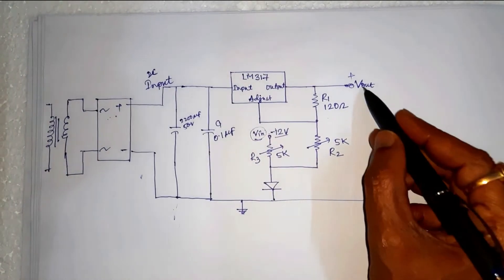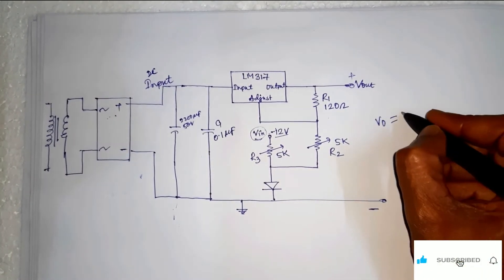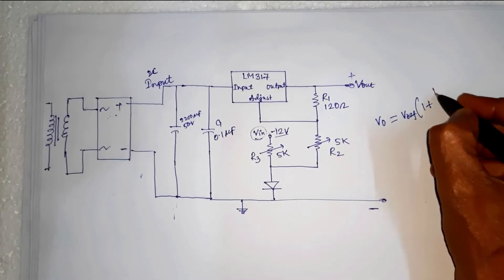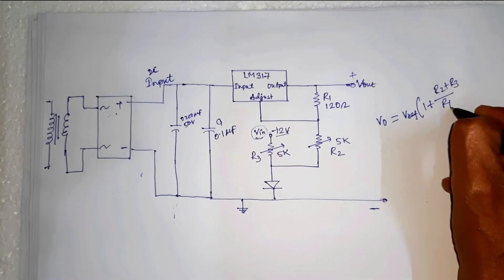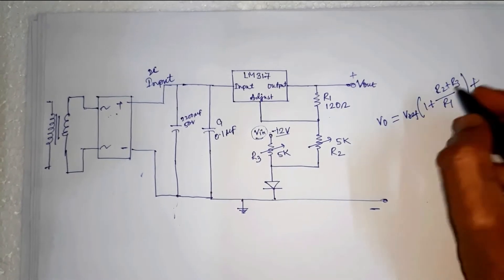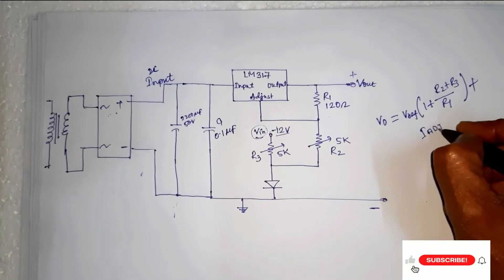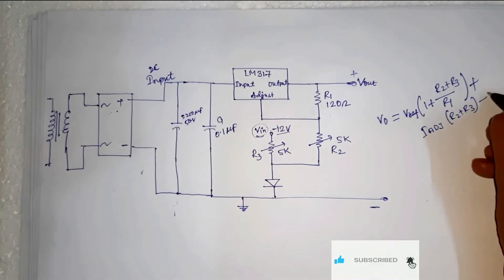In this case, the output voltage V-out is equal to V-reference into 1 plus R2 plus R3 by R1 plus IADJ into R2 plus R3 minus 12 volt.